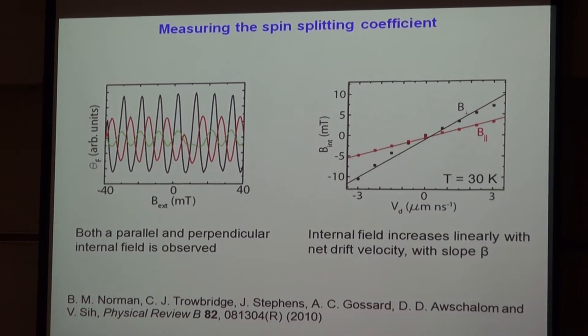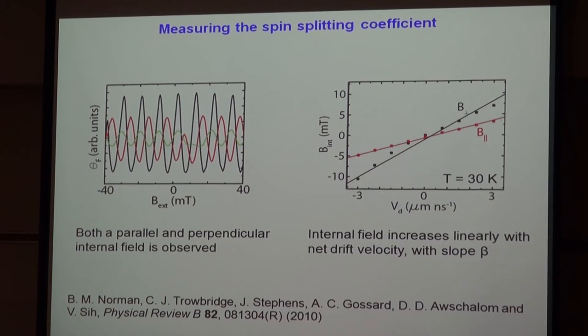If we do measurements as a function of applied voltage, they increase linearly, and we fit that slope to get a coefficient we call beta.